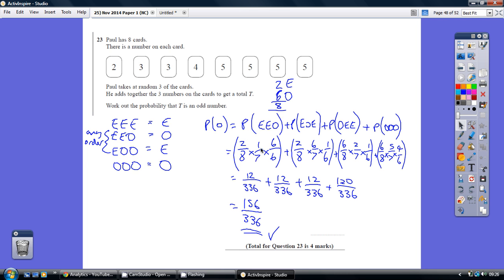Then to get another even, given that that even is gone, is one out of seven. And then finally to get an odd, there's only odds left, it's six out of six. So that's this probability.